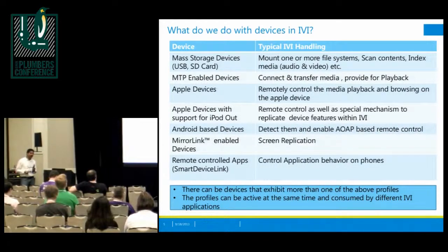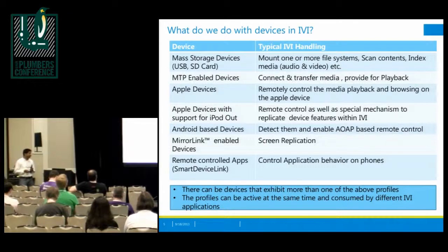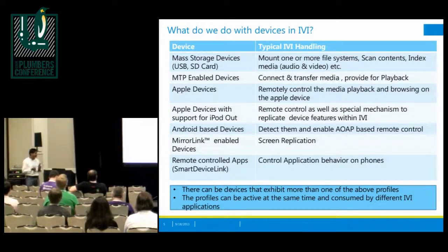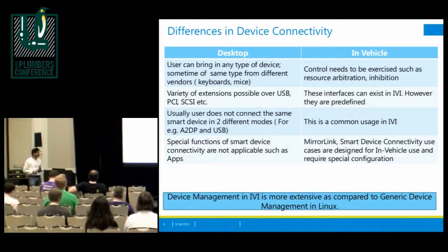If you notice, in-vehicle infotainment handling of devices is very different from what we do in a typical desktop-based environment. Fundamentally we want to foster safe driving. We want people to be able to access all the features on the devices they carry — the nomadic devices they bring in — without actually impacting the safety of the driver, any passenger, or somebody on the road. That brings a lot of challenges. There are also differences we need to consider from a desktop versus in-vehicle perspective.